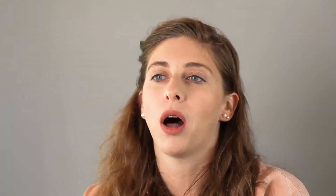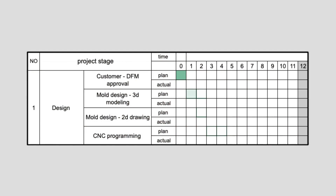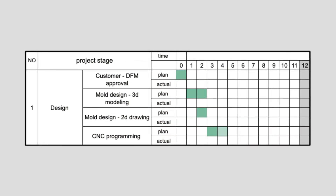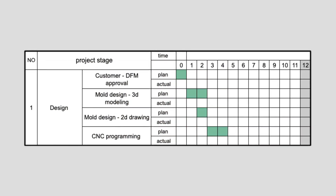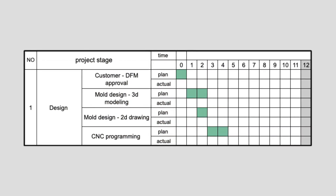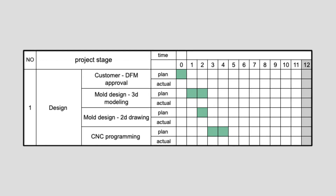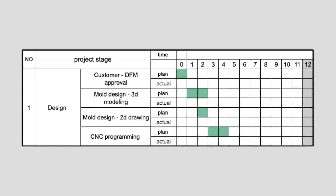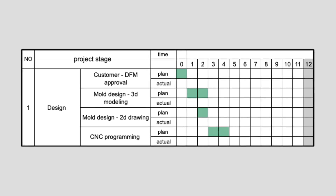When the design is finalized, modeling the mold can begin. Modeling the mold in 3D and creating the 2D drawing takes about two days. Next, CNC programming can begin, which takes another two days.